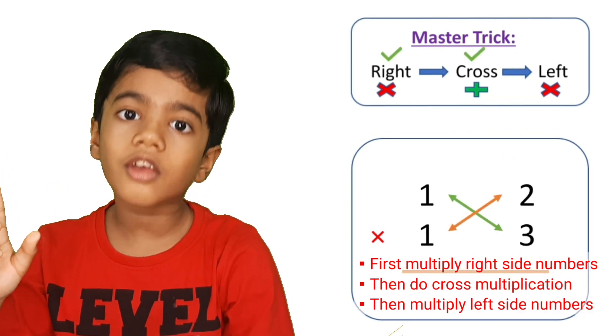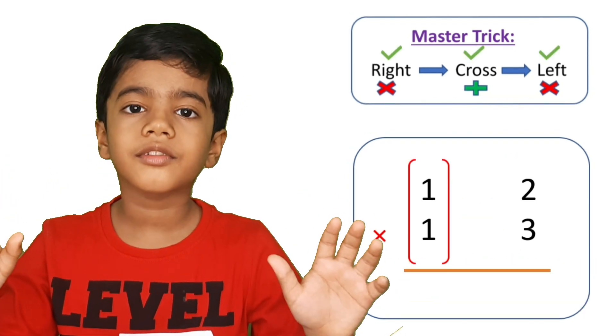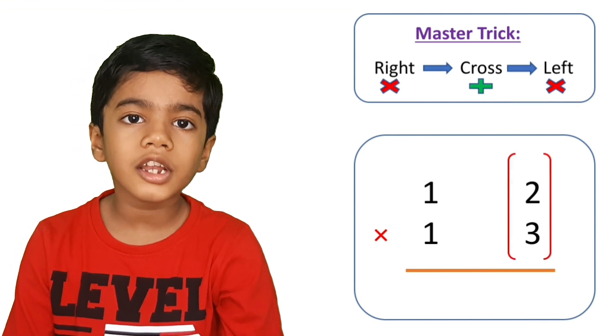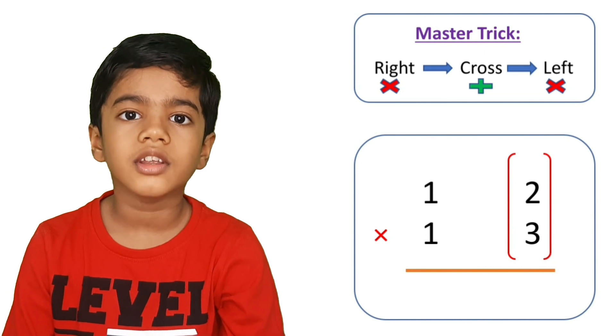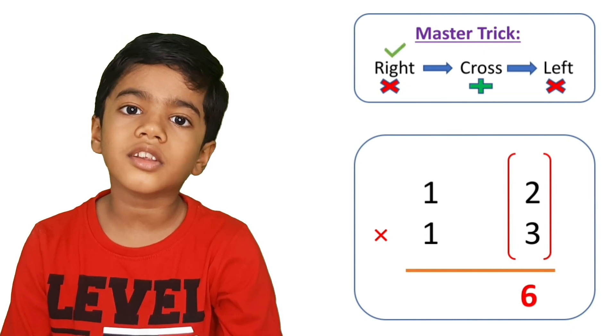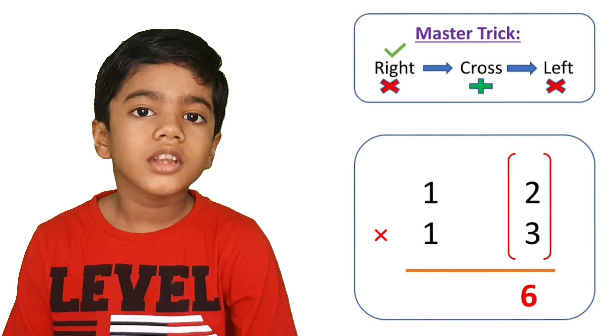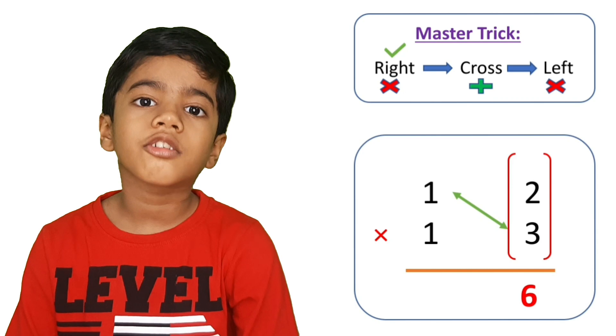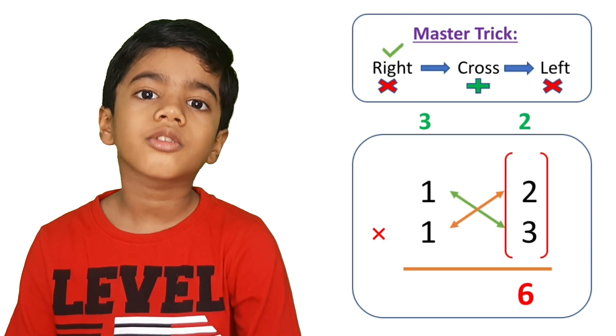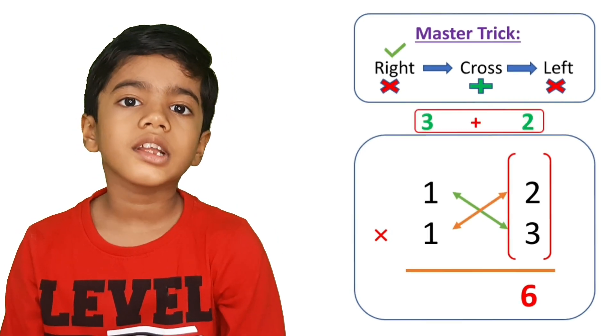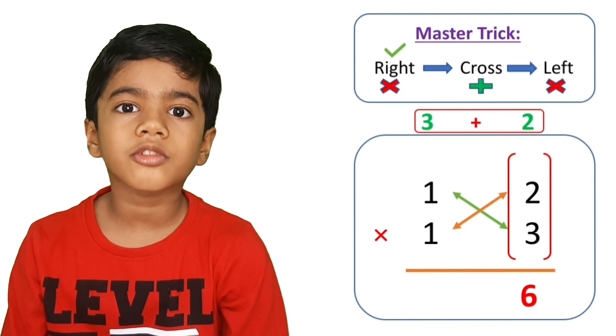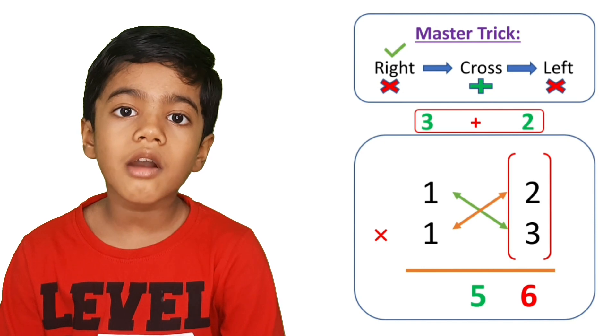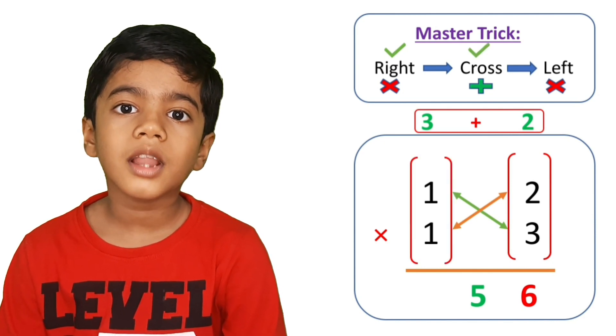Right side we have 2 and 3, so let's multiply: 2 times 3 equals 6. Write here 6. Now let's do cross multiplication: 1 into 3 is 3, 1 into 2 is 2. Now let's add: 3 plus 2 equals 5, so write here 5.